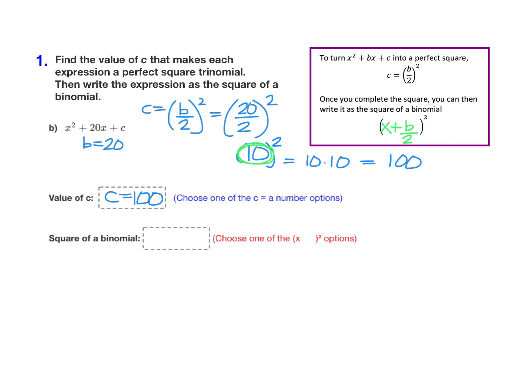And b is positive here, so our factor will be x plus 10 quantity squared. So you can just find those from the choices and drag and drop them into the box.